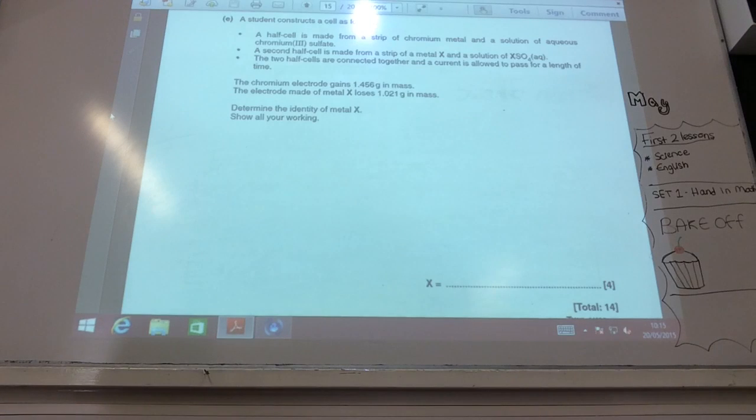Right, so here we go. A student constructs a cell and the chromium electrode gains in mass and the other metal loses mass. We need to identify that metal.